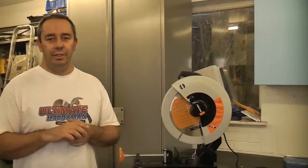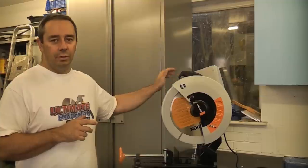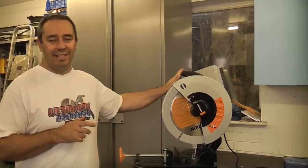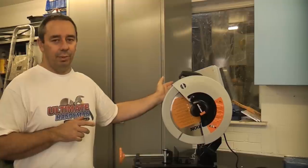If that demonstration didn't clinch it for you I'll just run through a few of the points again. The Evolution saw can cut wood, metal, plastic. It can also cut aluminium and non-ferrous metals all using the same blade.